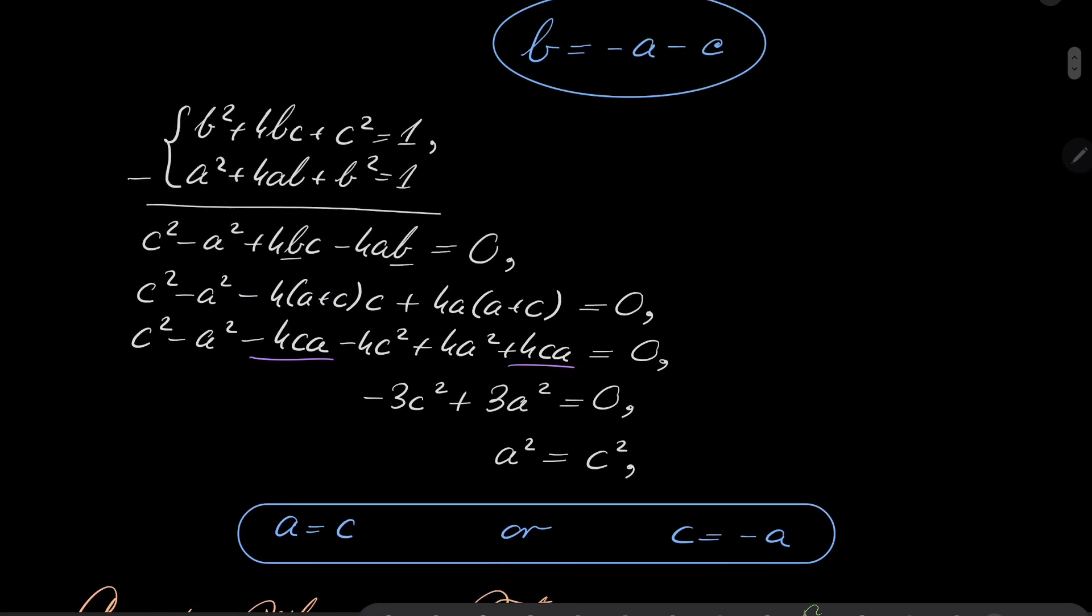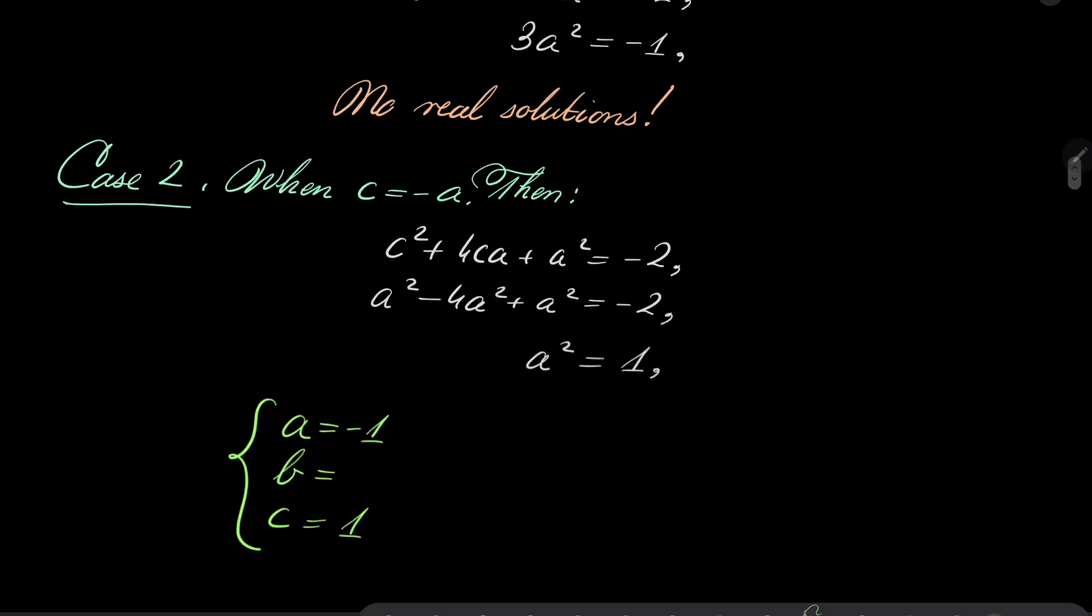Well, recall that b = -a - c. So it's -(-1) - 1 = 0. Or the second possibility, (a, b, c) is (1, 0, -1).